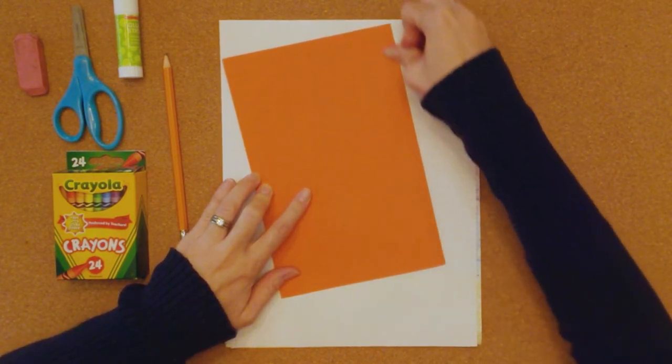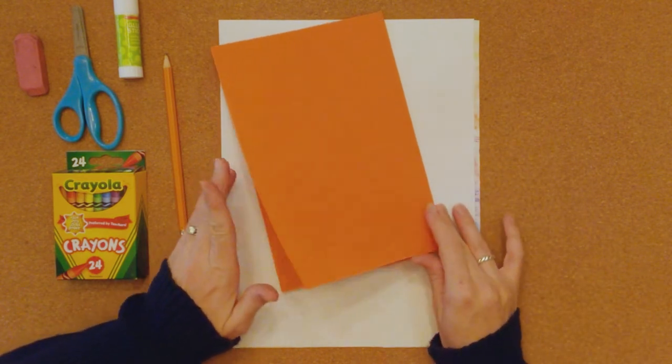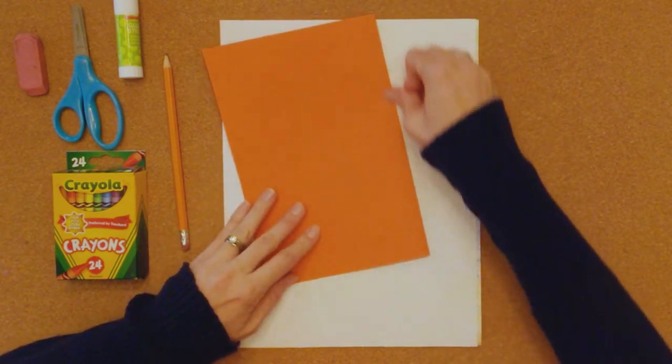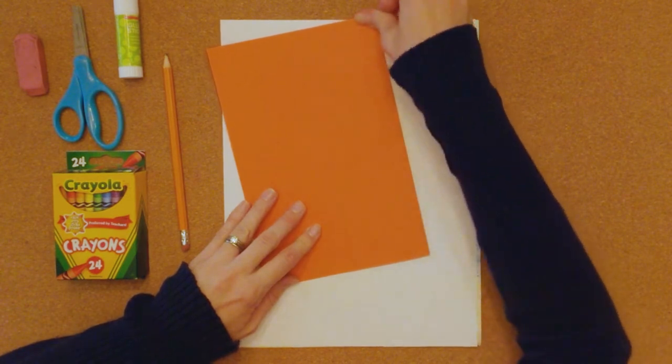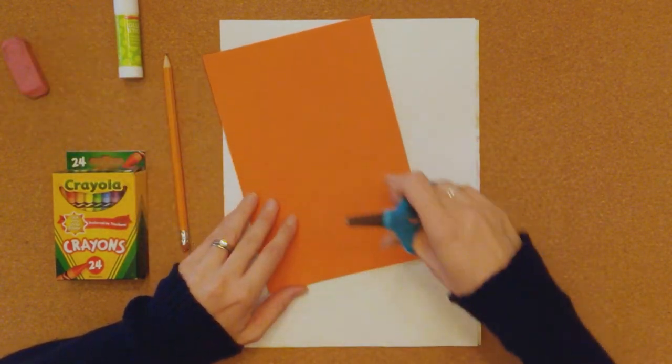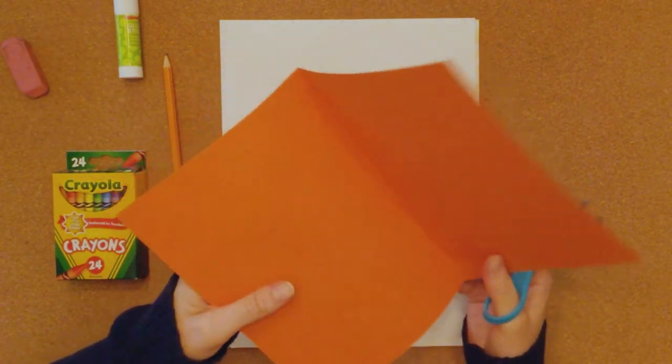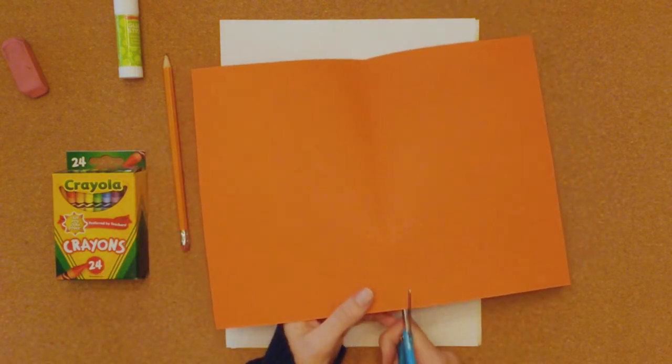If you need a grown-up to help you, you can ask your grown-up to help you fold it in half. Okay so we've folded it and I've kind of pressed it down on the edge. I'm going to take my scissors and I'm just going to cut that sheet of paper in half.